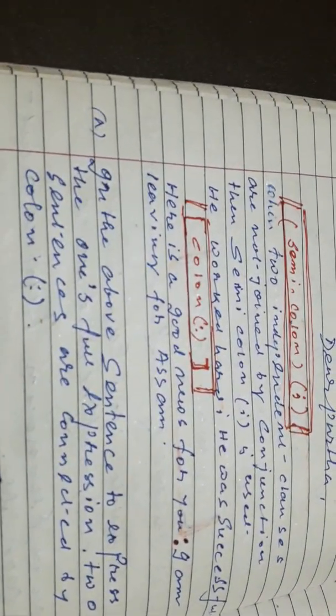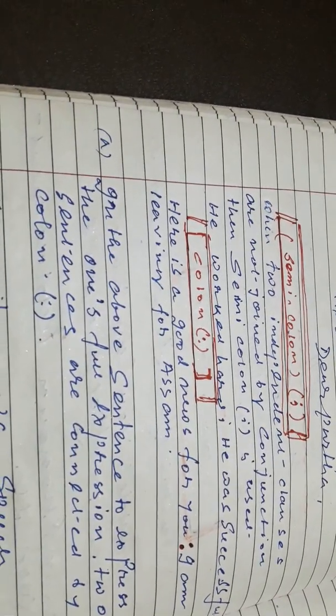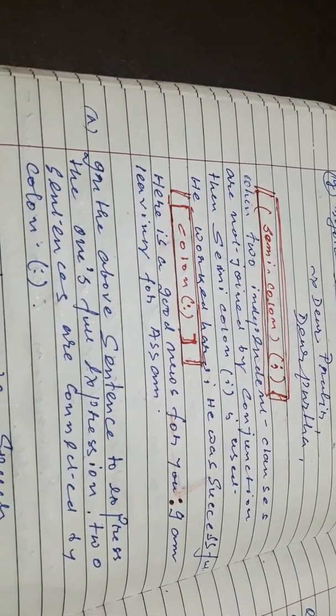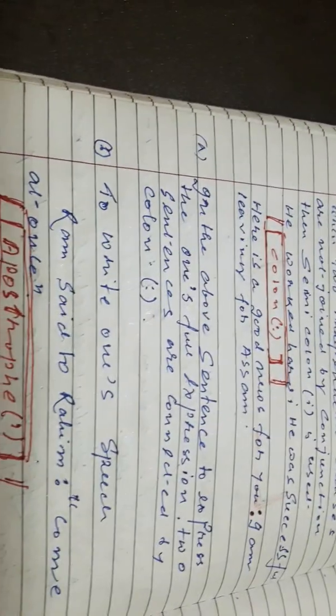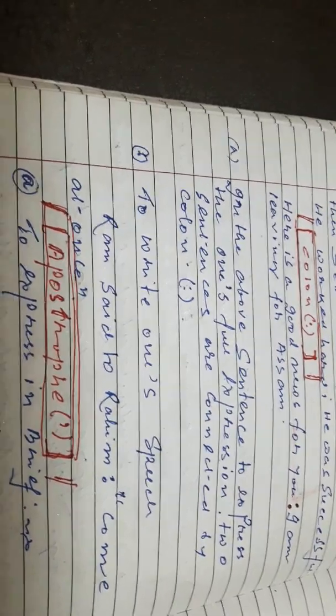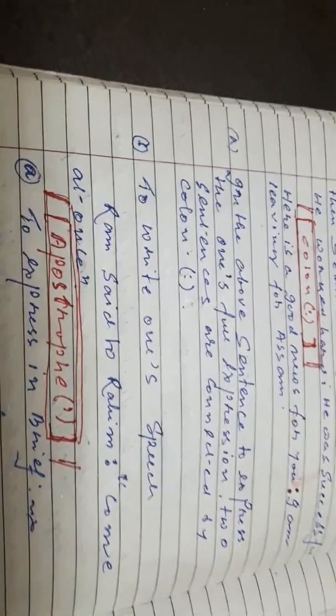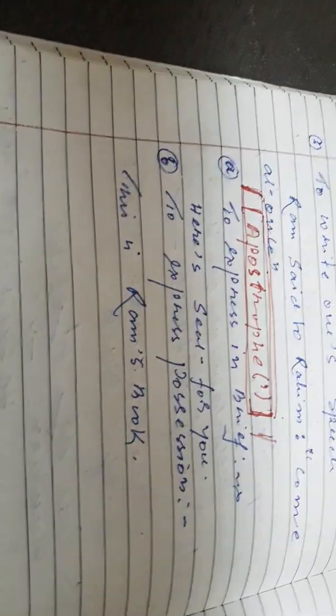A semicolon is used when two independent clauses are joined without a conjunction. For example: 'He worked hard; he was successful.' A colon is used before an explanation or related statement. For example: 'Here is good news for you: I am leaving for Assam.'